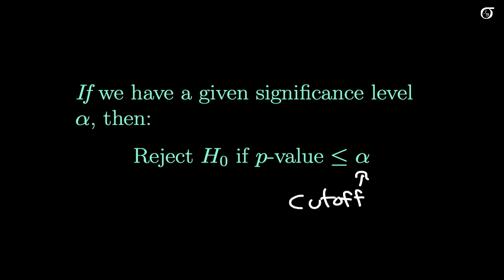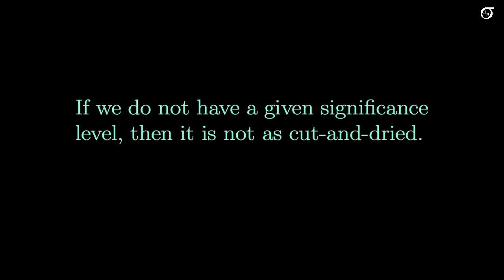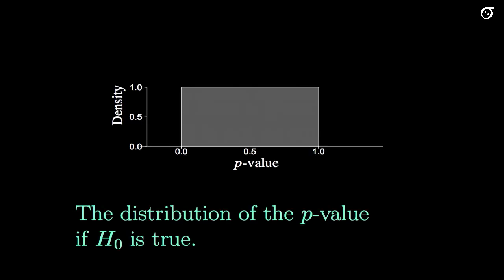Life is easy if we have a given significance level, but if we don't — and we don't always — then we still have to come up with a reasonable conclusion. If we don't have a given level of significance, we still want to be able to say something reasonable. To do so, we might want to think about the distribution of the p-value. Here is the distribution of the p-value under the null hypothesis: if the null hypothesis is actually true, this p-value has a uniform distribution between zero and one — any value between zero and one is equally likely. But if the null hypothesis is false, we will tend to get p-values that are starting to get closer to zero. When we get p-values that are small, closer to zero, this is providing evidence against the null hypothesis.